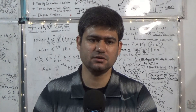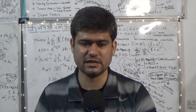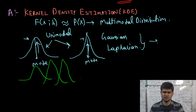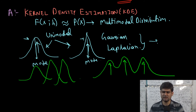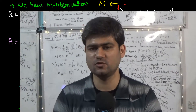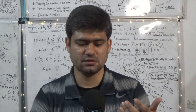A multimodal distribution will have two or more peaks. For example, if we consider a mixture of Gaussians — one Gaussian here, one Gaussian here, and one Gaussian here — then the underlying density function may look something like a combined curve. As we can see, it has three peaks and therefore three modes. The kernel density estimation method gives us the ability to compute this functional mapping f of x parameterized by h that well approximates the underlying multimodal distribution that generated the dataset.